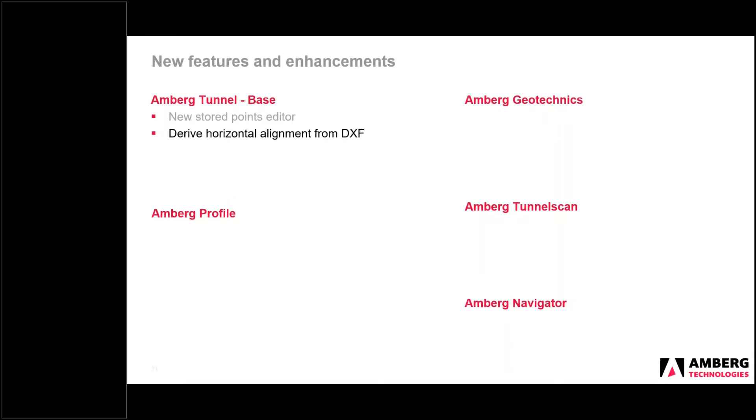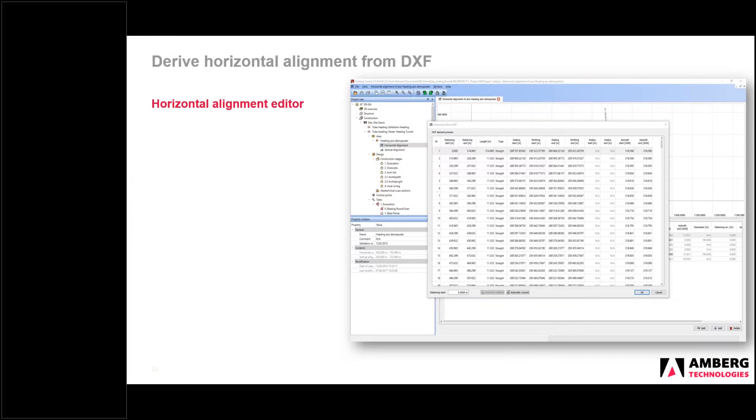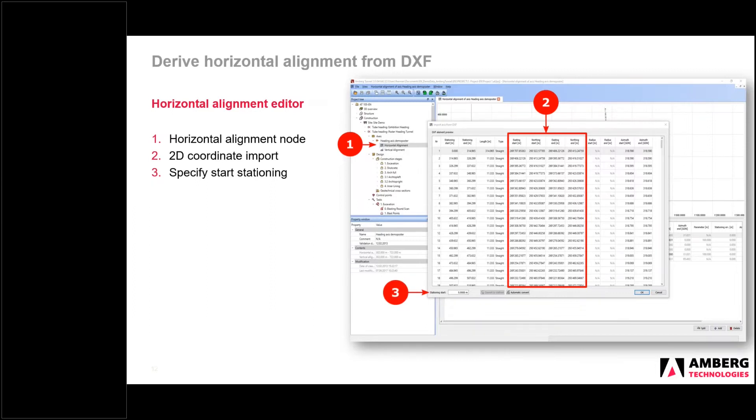The next new feature, our enhancement we've created, is to be able to derive a horizontal alignment from a DXF import. The ideal scenario, I think, for everybody is to have a land.xml file and simply to import that directly into Hamburg Tunnel. In some cases, users just have a DXF file. We now support the importing of DXF. The horizontal alignment node, it's imported in the same manner as importing a land.xml or defining the definition manually. If you import a 2D or a 3D DXF, it will take the 2D information. You also can specify a start stationing range because a DXF does not contain stationing information. The user needs to enter this information here on import.